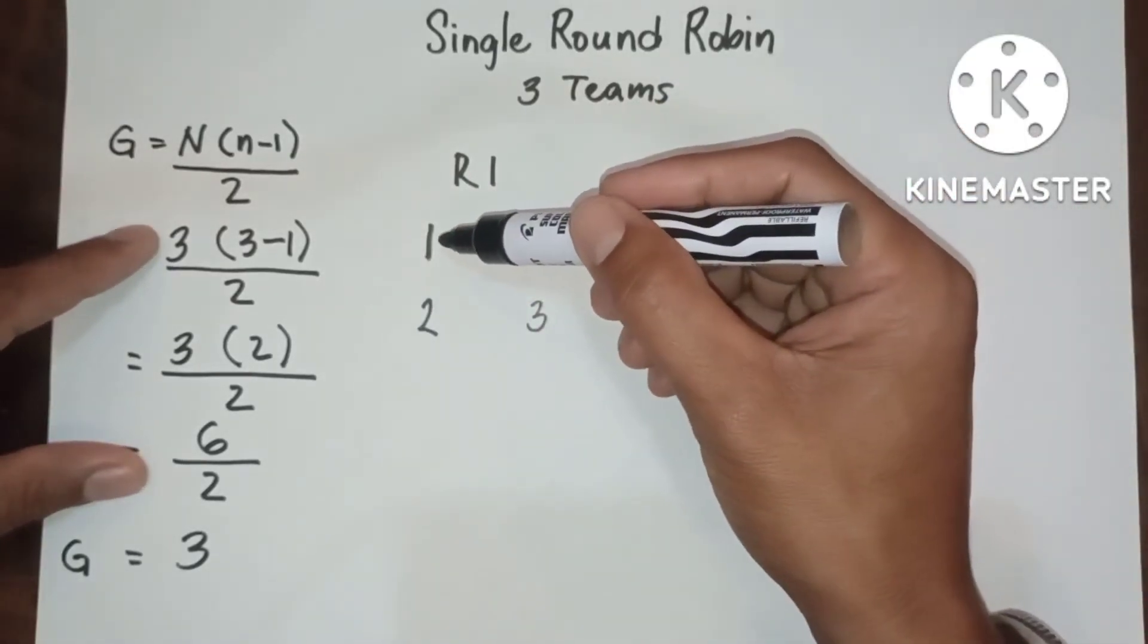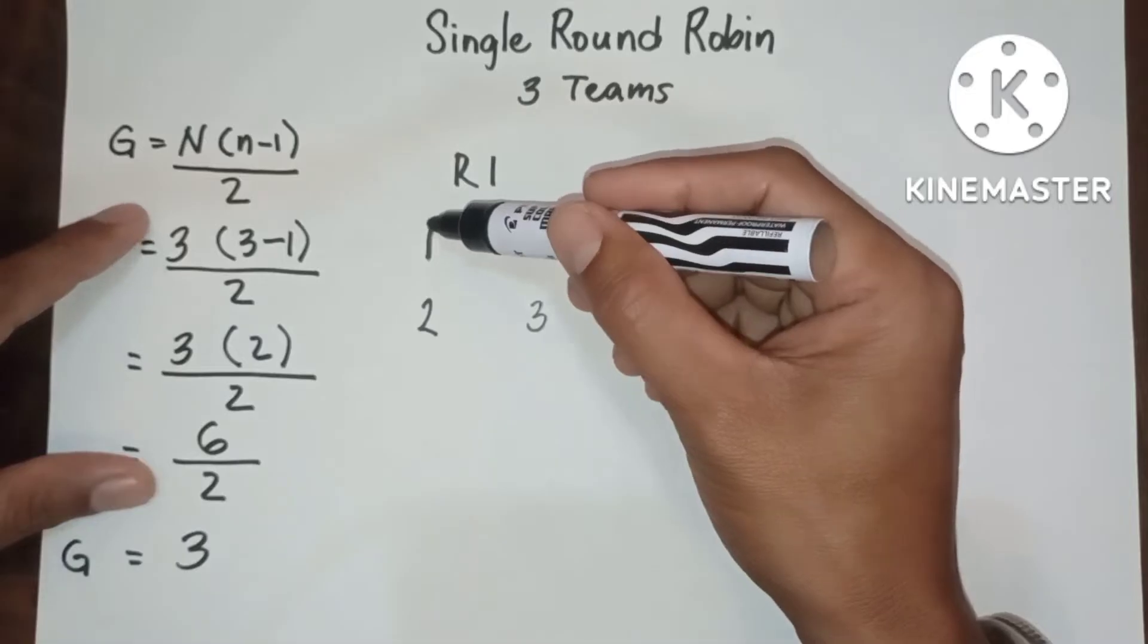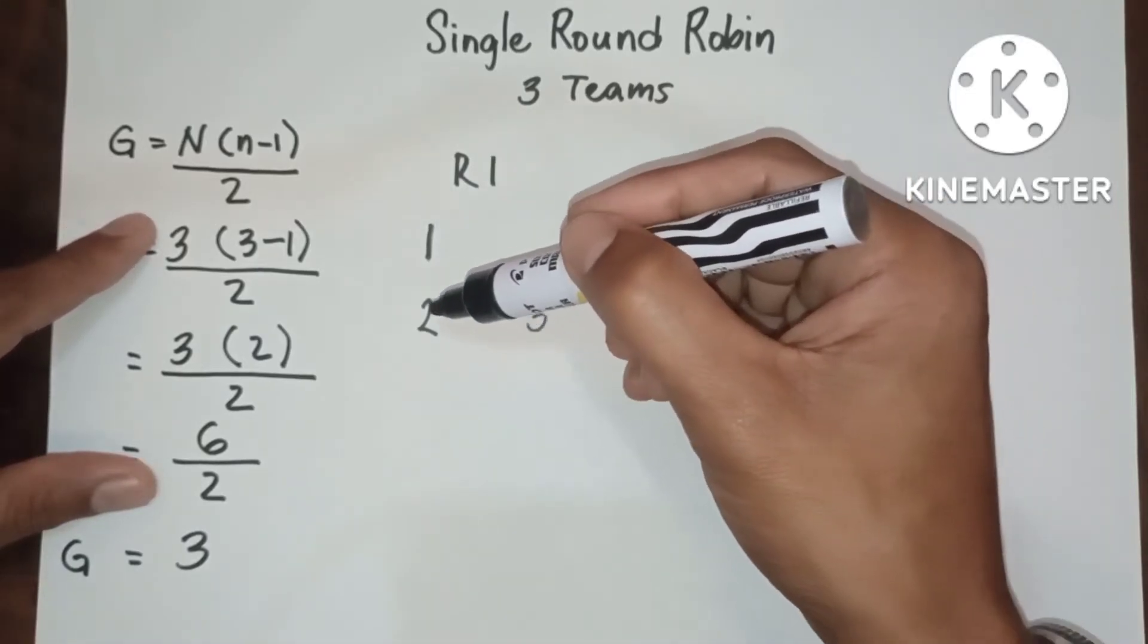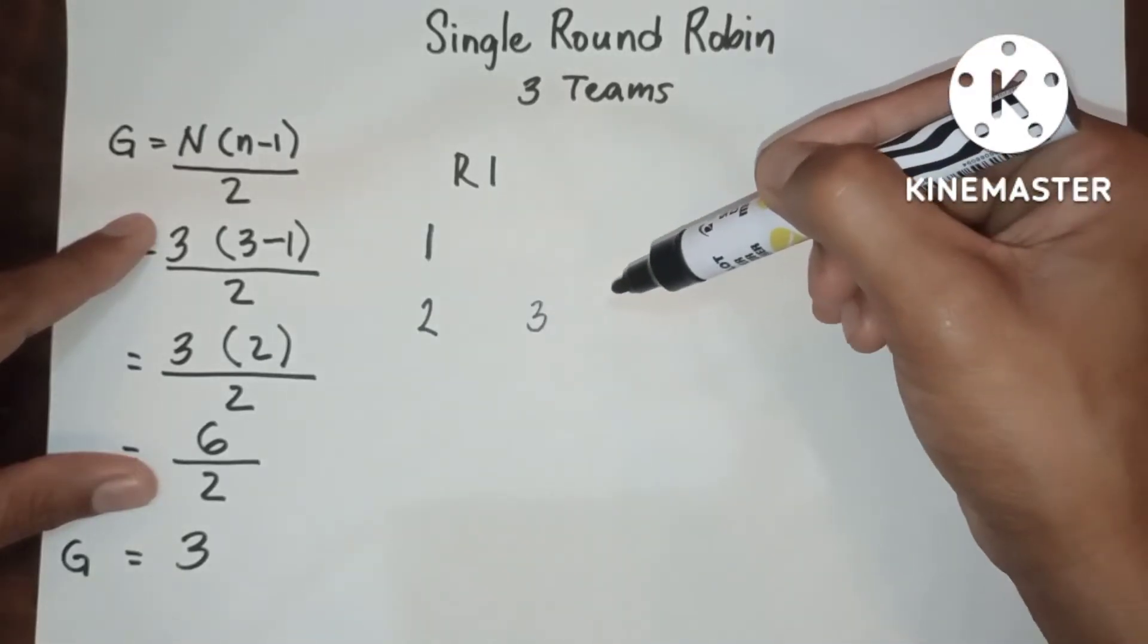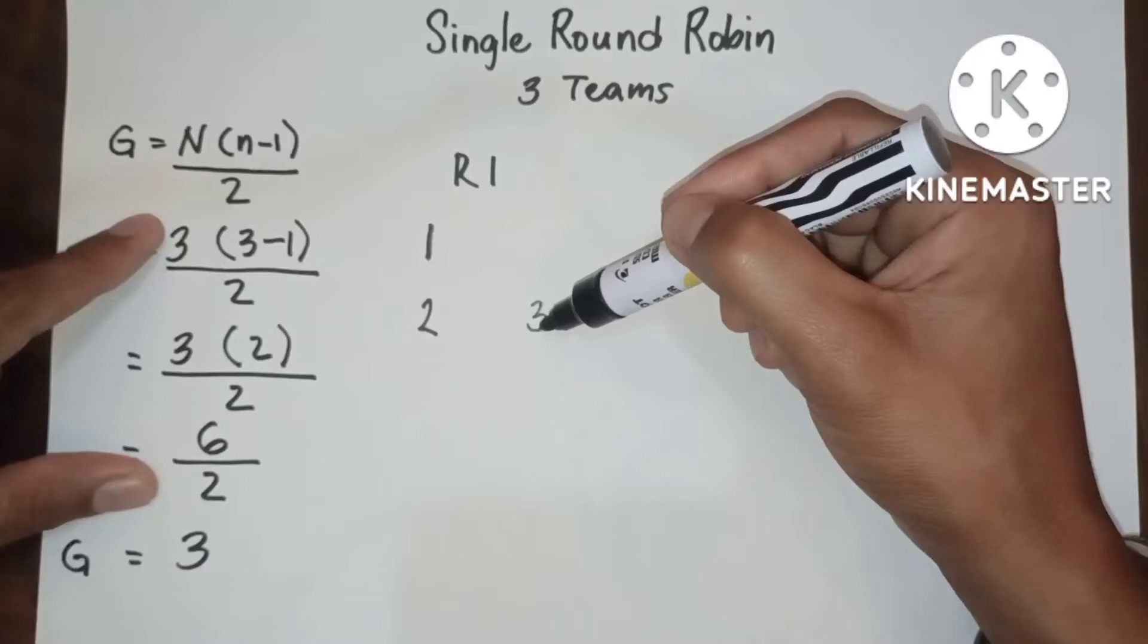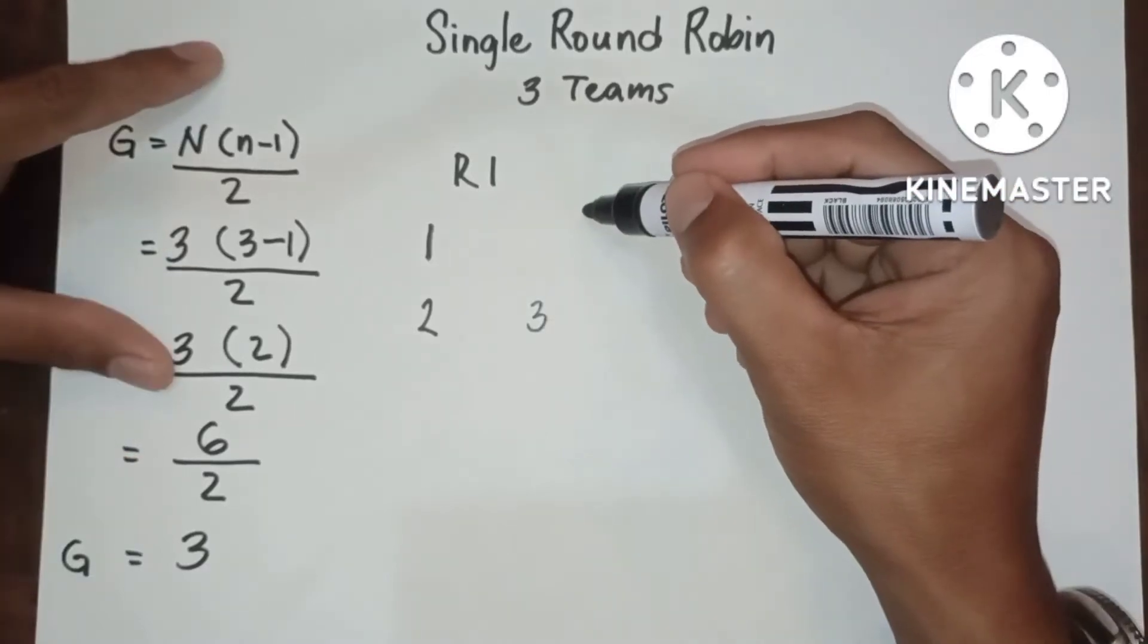That will start in the left side, 1, downward, 2, and then going to the second column, the 3. This is round 1.